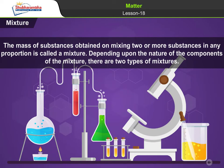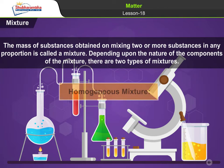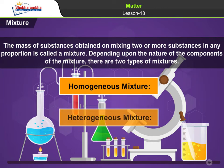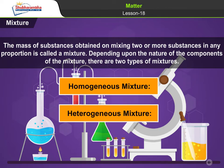Mixture. The mass of substances obtained on mixing two or more substances in any proportion is called a mixture. Depending upon the nature of the components, there are two types of mixtures: homogeneous mixture and heterogeneous mixture.